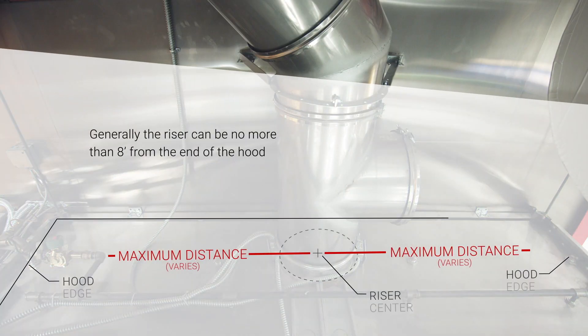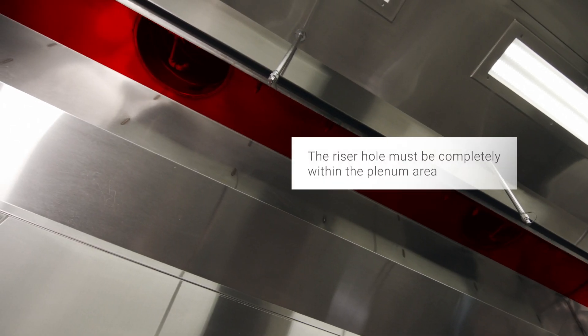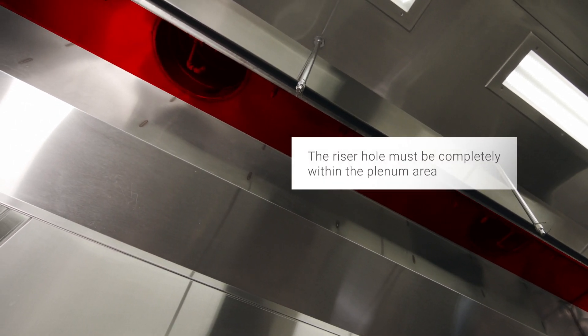To install a field installed riser, locate the desired position of the riser on top of the hood, ensuring the location complies with the hood manufacturer's requirements. Make sure that the hole location is inside the plenum area before cutting.